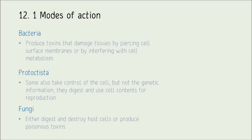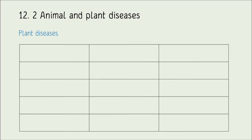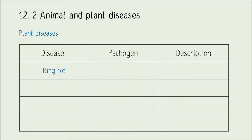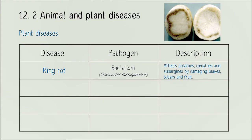Now let's look at some named examples of plant and animal diseases. For the plant diseases we need to know for OCR: first, ring rot — a distinctive ring-shaped infection affecting potatoes, tomatoes, and aubergines, damaging leaves, tubers, and fruiting parts. It is caused by a bacterial infection (Clavibacter michiganensis). The key thing is knowing it is bacterial.